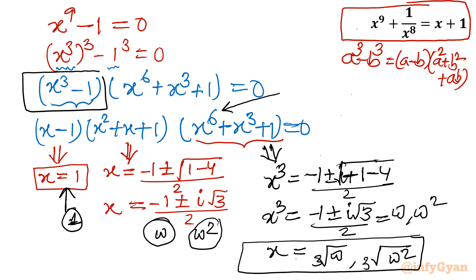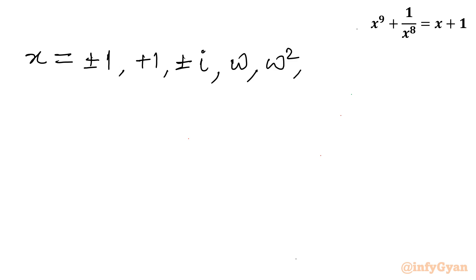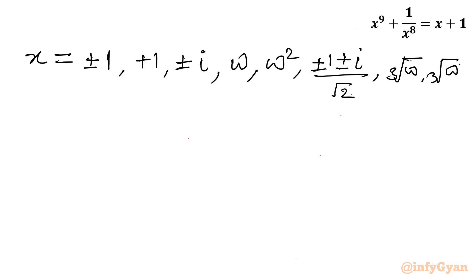The overall solutions of the complete equation are: x = ±1 (from equation 1), x = ±i (from equation 1), the cube roots of unity ω and ω² (from equation 2), the four complex values ±1 ± i over √2 (from equation 1), and the six complex cube roots of ω and ω² (from equation 2). Counting: 2 + 2 + 2 + 4 + 3 + 3 + 1 = 17 solutions total.